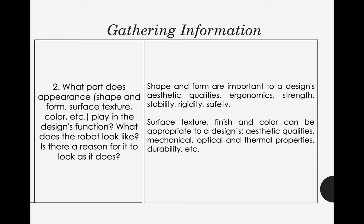Aside from shape, you also need to consider that surface texture, finish, and color can be appropriate to a design. For example, if your robot is intended for outdoor use, make sure that the color or texture of your robot can adapt to the environment itself. We also have optical and thermal properties, as well as the durability and flexibility of our robot.